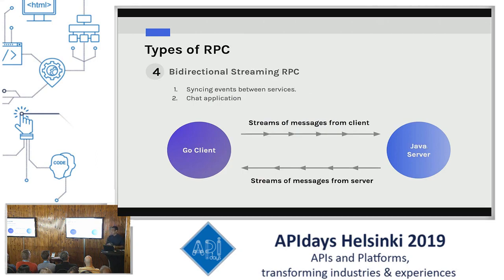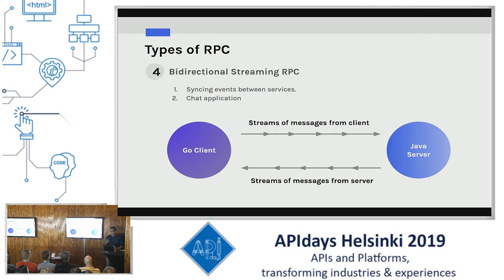Another type of RPC is bidirectional RPCs, and this is where it gets even more interesting — because now you've got two live entities who can continuously communicate with each other. The client and server are no longer just making one REST call and waiting for a response. It's continuous communication between the two. Use cases include syncing events between services, a simple chat application, audio streaming, audio calls, video streaming, and video calls — all of which require bidirectional streaming.